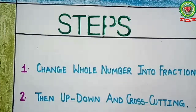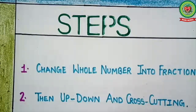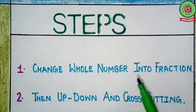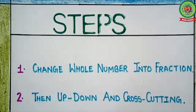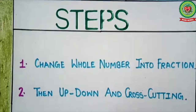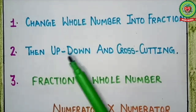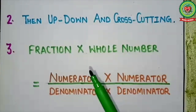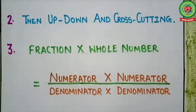We will apply the same fundamentals for fractions. Here we have some steps to follow. Step 1: change the whole number into a fraction — if we write 1 as the denominator, the whole number will change into a fraction. Step 2: up, down and cross cutting. Step 3: numerator multiply by numerator and denominator multiply by denominator.